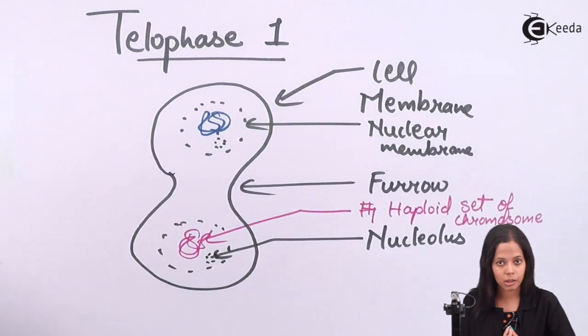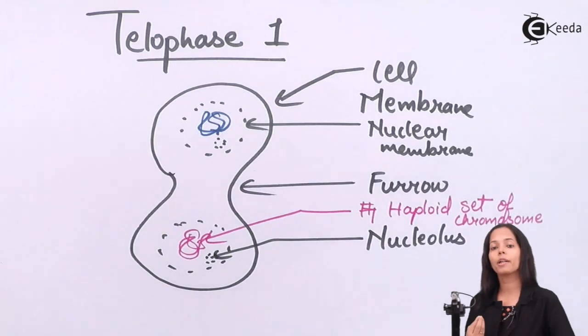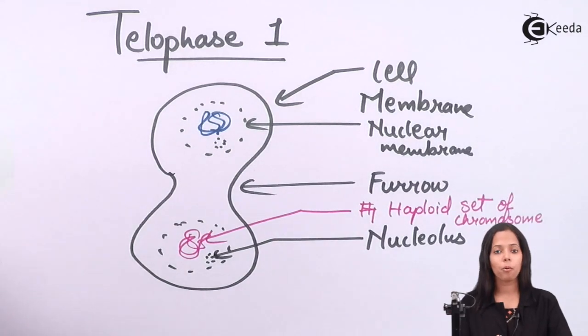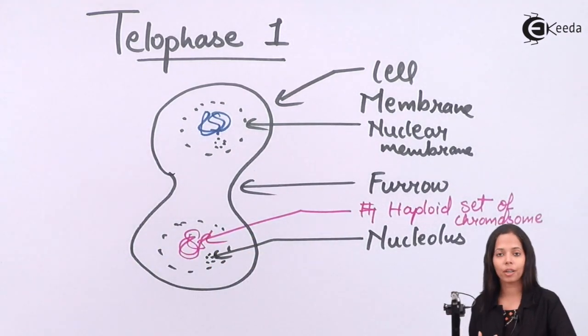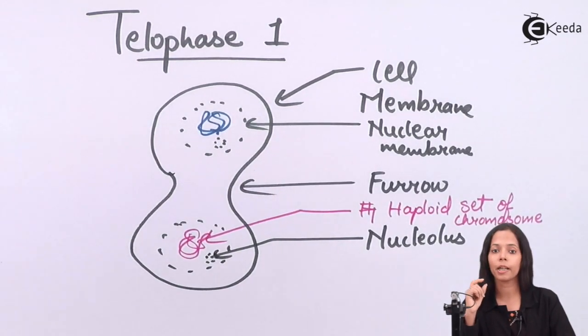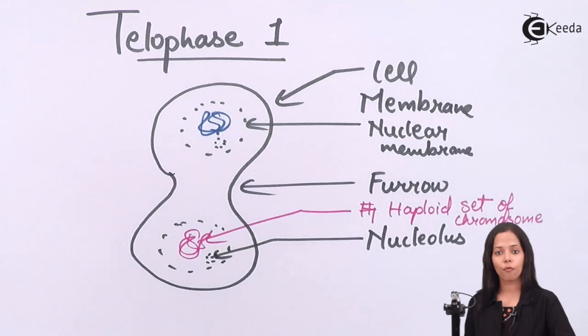This is how telophase looks. Almost all structures are the same as mitosis, except the number of chromosomes. There will be only one set of chromosomes present in each nucleus. Note it carefully - we completed telophase one. Thank you very much, students.